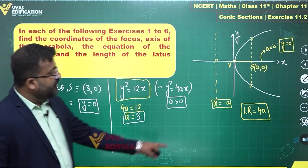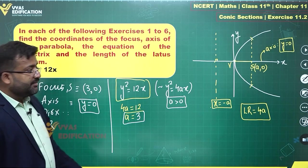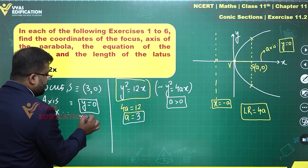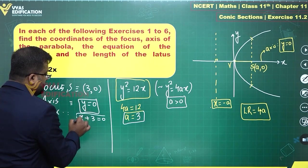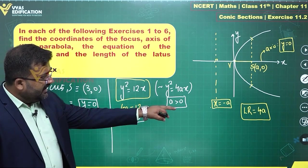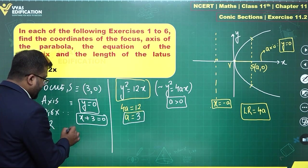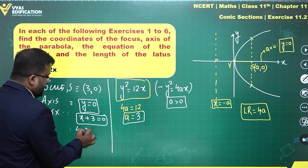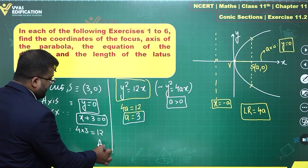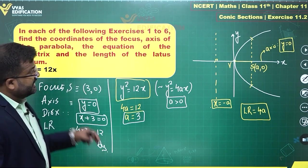Directrix is X = -a or X + a = 0 that becomes X + 3 = 0 for a = 3. Latus rectum is equal to 4a, 4 times 3 which is 12. That's my answer for this complete question.